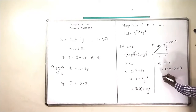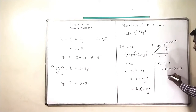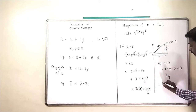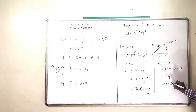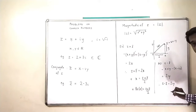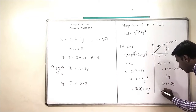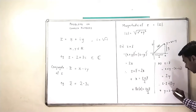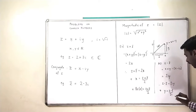The X component will cancel, and we will get iY and an iY, which will be 2iY. And therefore our observation is that Z minus Z bar is 2iY, which means that Y is equal to Z minus Z bar upon 2i.